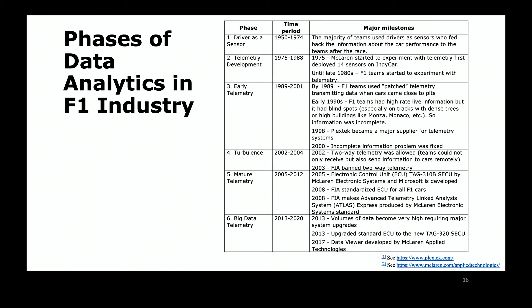In 1975, McLaren basically developed sensors for IndyCar, capturing information during the race. Various teams experimented with sensors all the way until the late 1980s. By 1989, teams used patch telemetry, transmitting data from cars when they were close to the pits, but when they were far away there were blackout zones where you couldn't capture any data. In the early 1990s, Formula One teams had high-rate live information, but it also had blind spots.